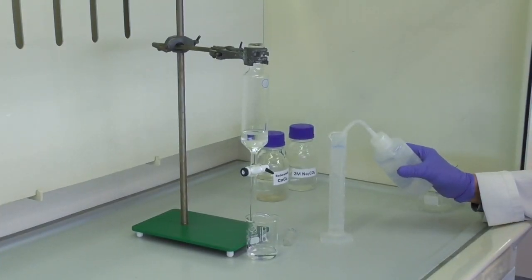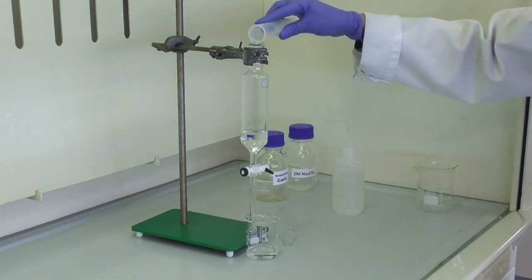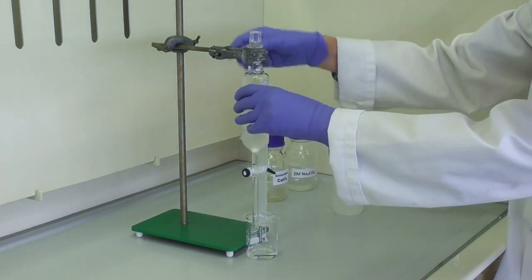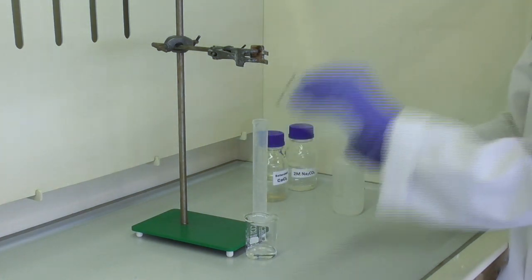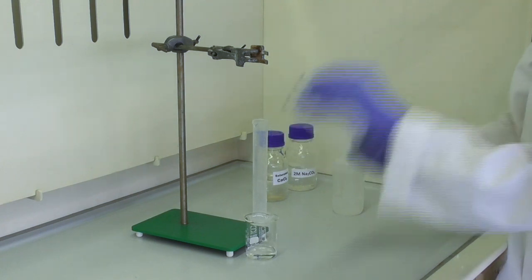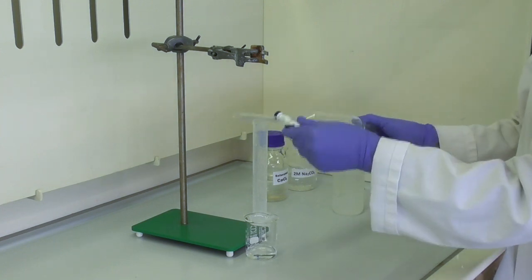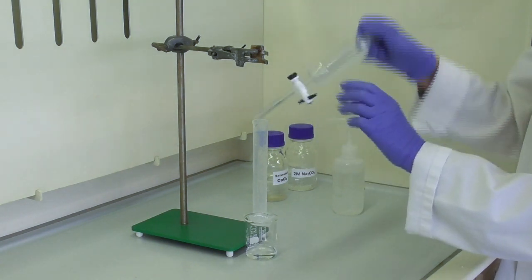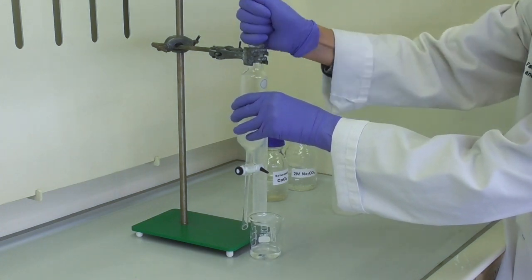The next step is washing the solution with 10ml of water, which we add to the separating funnel. Again, we shake this one, opening the tap frequently to start with, then just shaking it vigorously. This only requires a minute or two of shaking and the wash is complete.